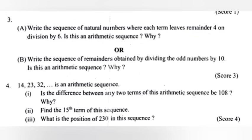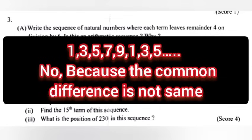Problem 3B: Write the sequence of remainders obtained by dividing the odd numbers by 10. Is this an arithmetic sequence? Why? Answer: 1, 3, 5, 7, 9, 1, 3, 5, etc. No, because the common difference is not the same.